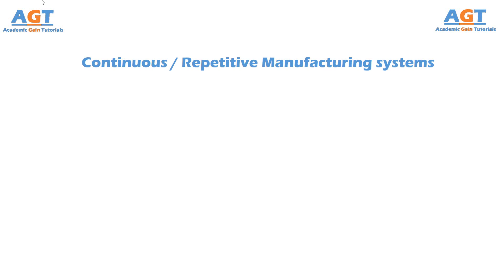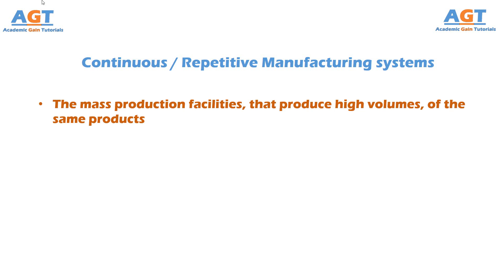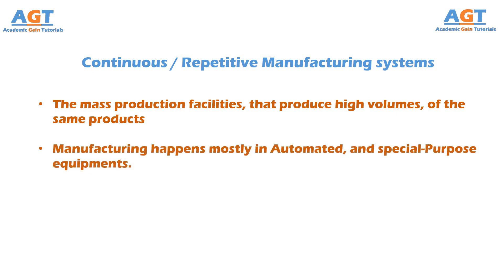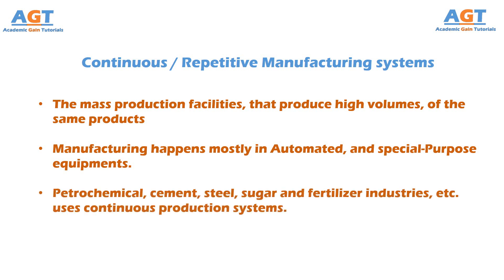Continuous production systems are also referred to as repetitive manufacturing systems. In other words, these are the mass production facilities that produce high volumes of the same products. In this case, manufacturing happens in automated and special purpose equipment. For example, petrochemical, cement, steel, sugar, and fertilizer industries use continuous production systems.